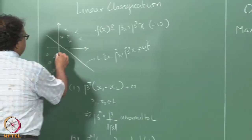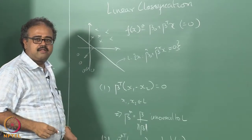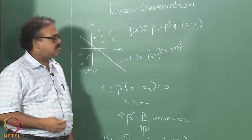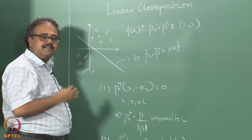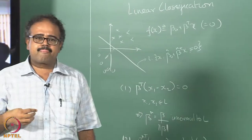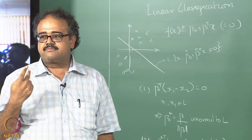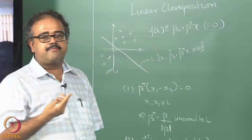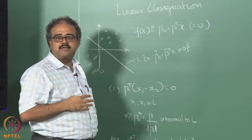If I want to maximize the distance of the closest point, I should move the hyperplane further away. How much further away can I move it? Until the closest point from both sides should be at the same distance — on both classes the closest point should be at the same distance from the hyperplane. And I have to choose an appropriate orientation for the hyperplane so that this distance is maximized.